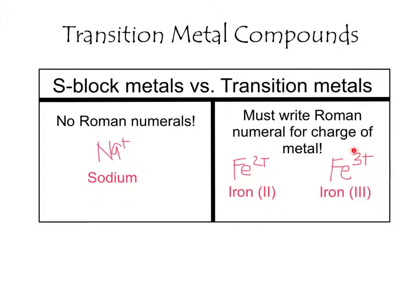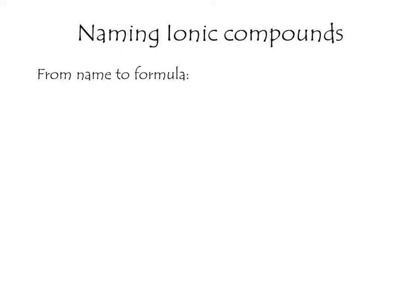You just need to look at where the element is on the periodic table — whether it's in the S block or in the transition metals, which is the D block. Now let's talk about how to go from name to formula.